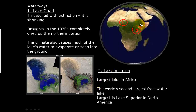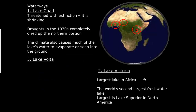The second lake we'll discuss is Lake Victoria, located in Africa's Great Lakes region. Lake Victoria is visible from space — it is the largest lake in Africa and the world's largest tropical freshwater lake. The largest freshwater lake overall is Lake Superior in North America.